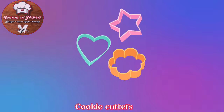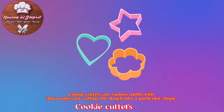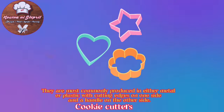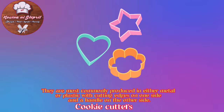Cookie Cutters: Cookie cutters are various molds with sharp edges for cutting the dough into a particular shape. They are most commonly produced in either metal or plastic, with cutting edges on one side and a handle on the other side.